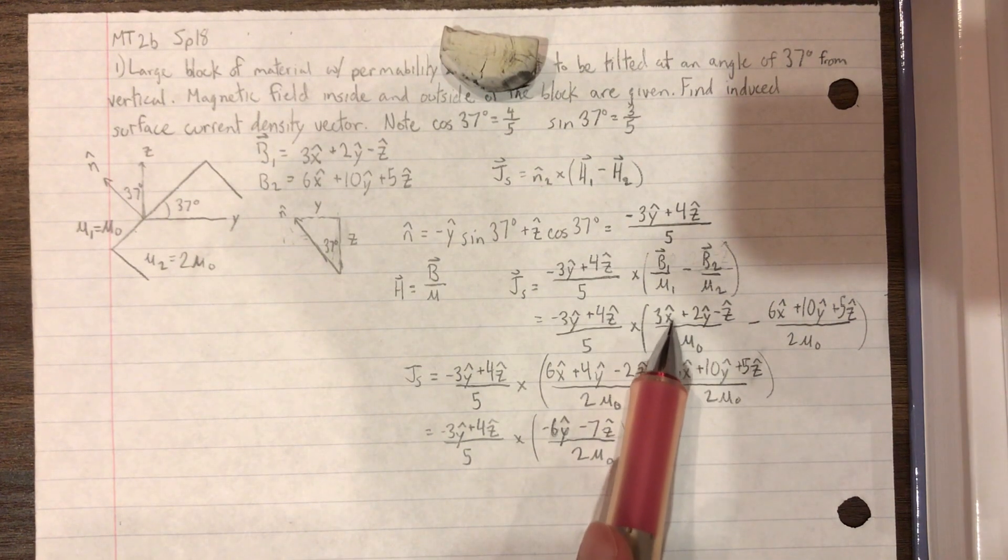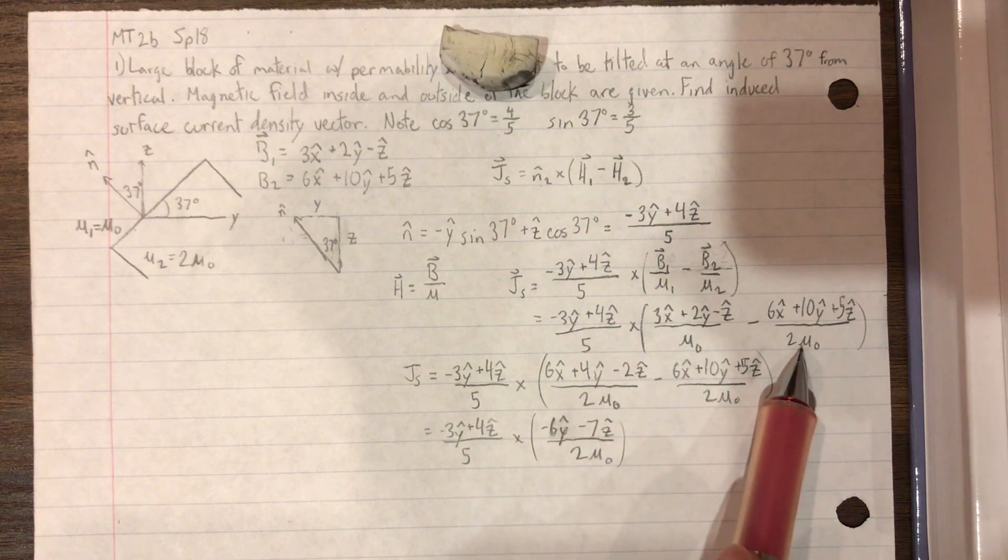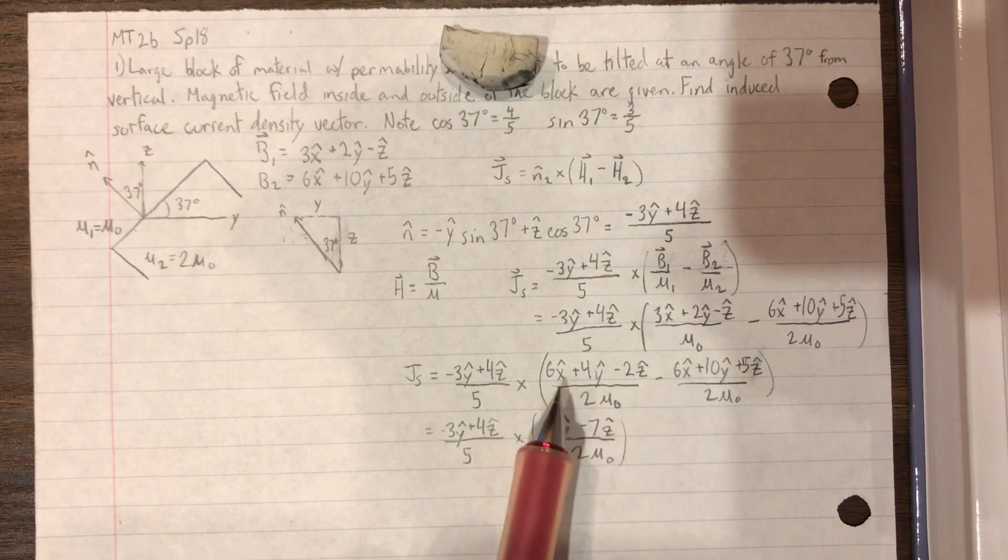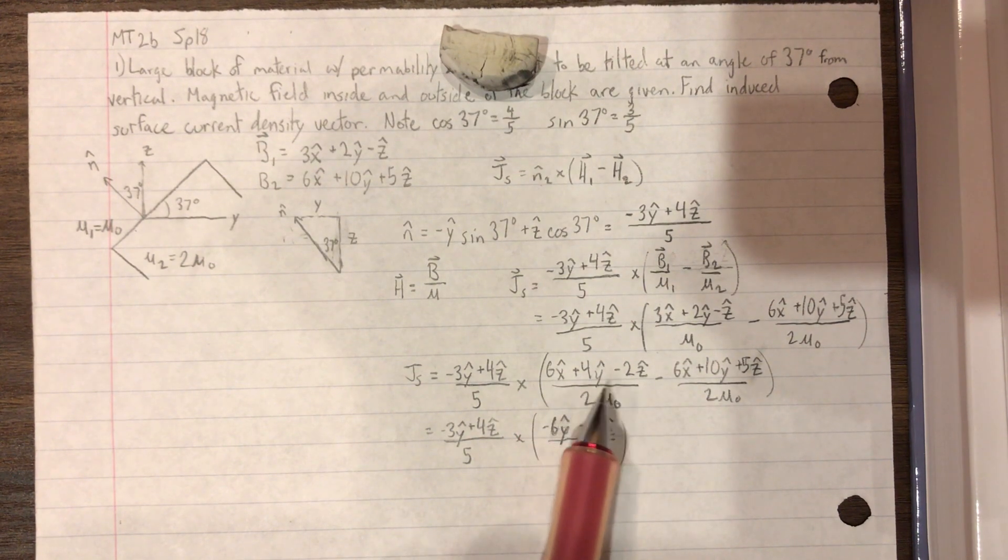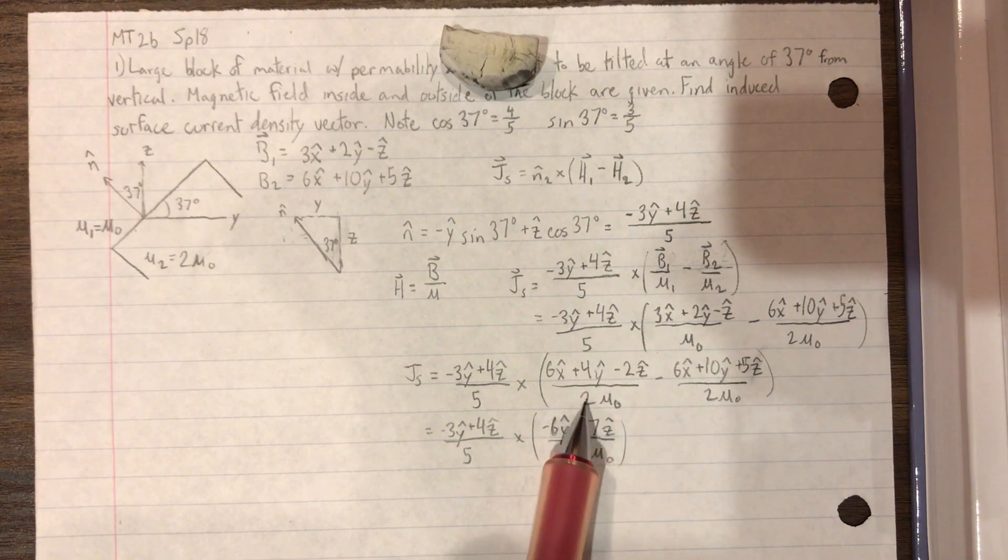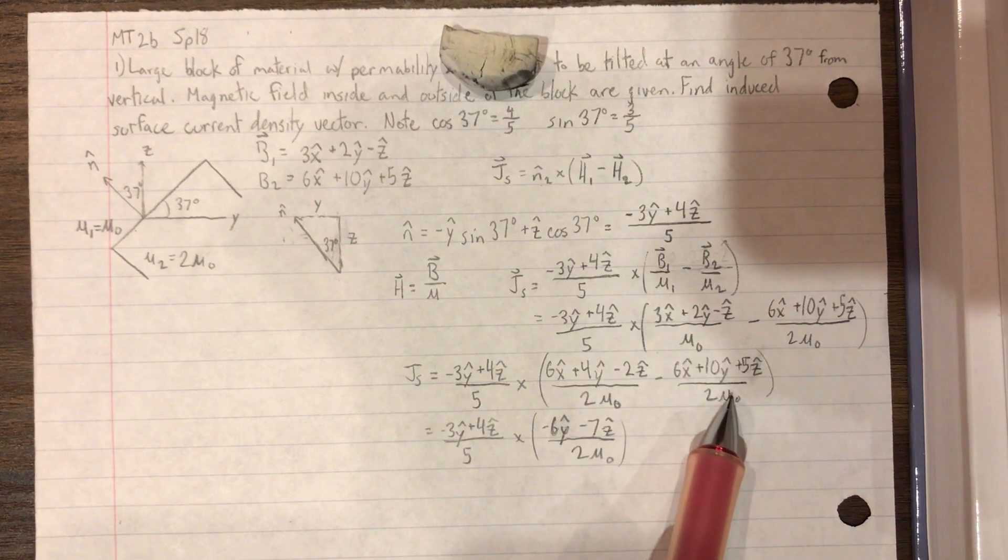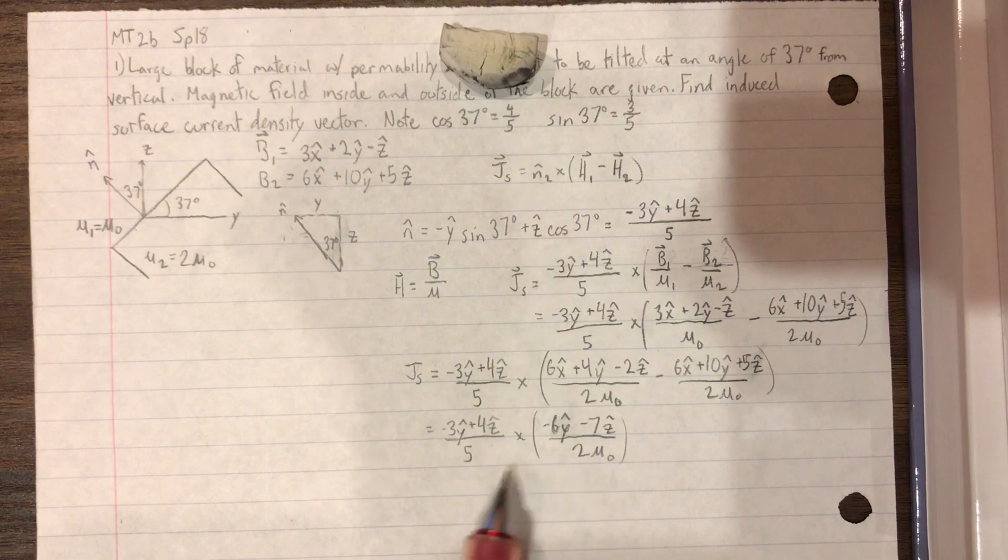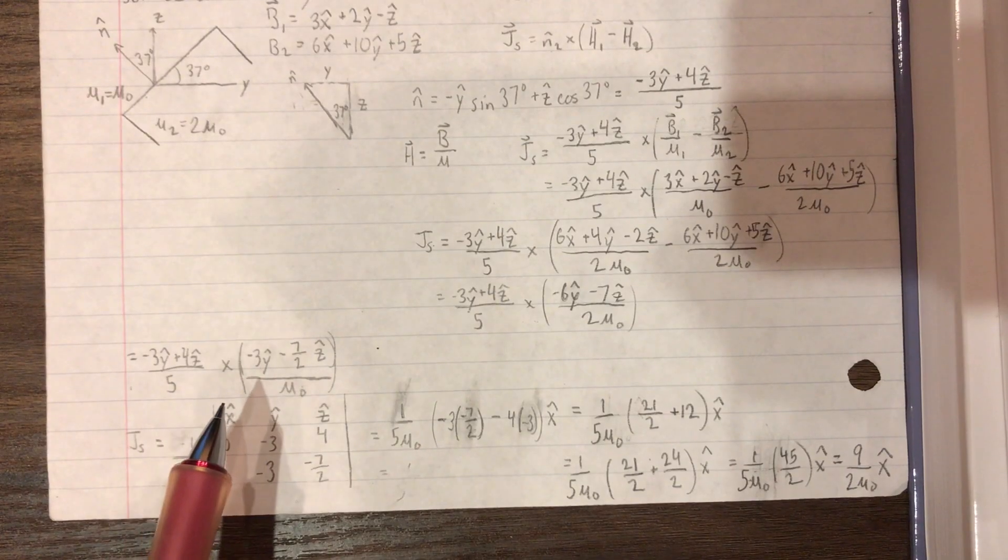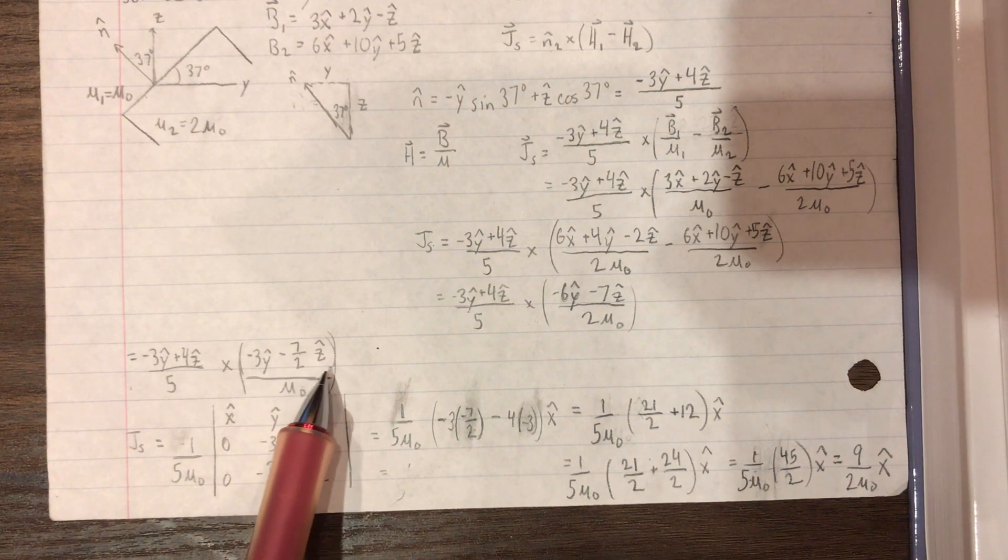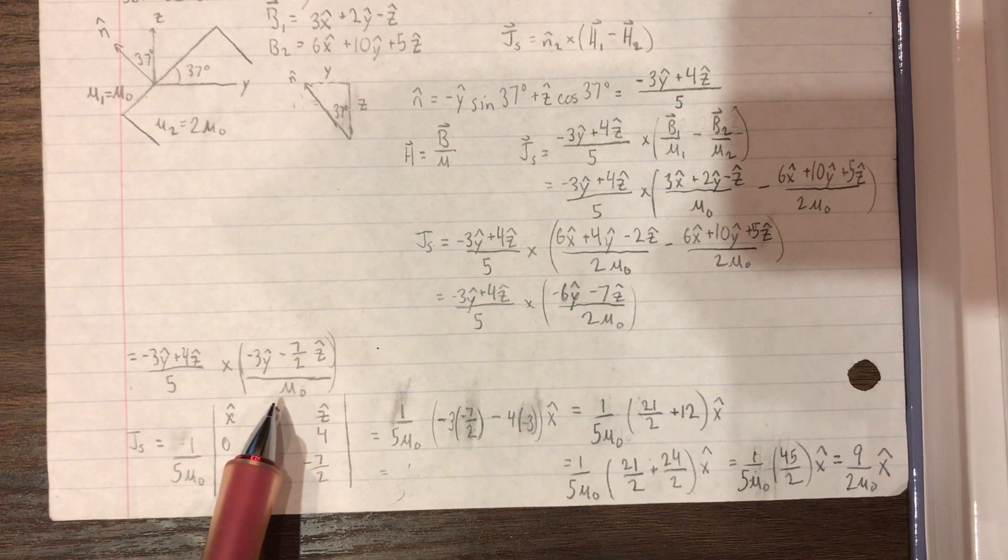So simplifying, we want to have this turn into that. So we multiply with 2, top and bottom, which would get us 6x hat plus 4y hat minus 2z hat. So now we could subtract this one from that one, which would simplify to this equation.